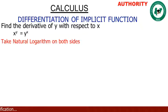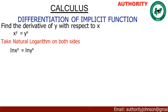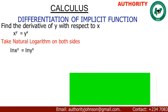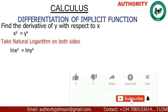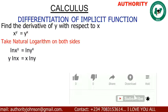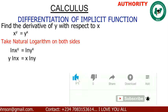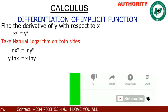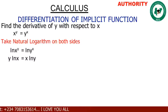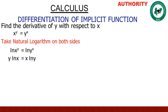Taking natural log on both sides, we have ln(x^y) = ln(y^x). Now, using the logarithm exponent rule, we bring the exponents to the front: y·ln(x) = x·ln(y). Here y is the exponent on the left side, so we bring it down, and x is the exponent on the right side, so we bring it down as well.